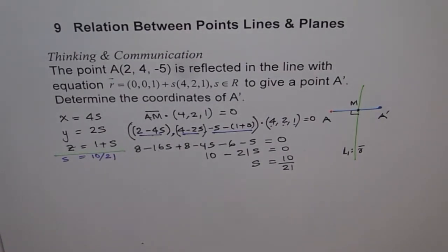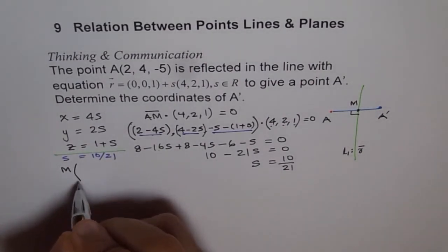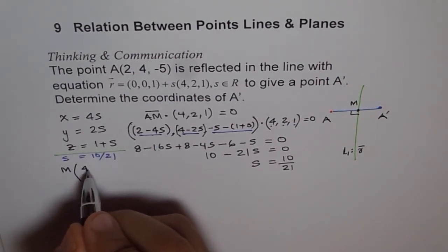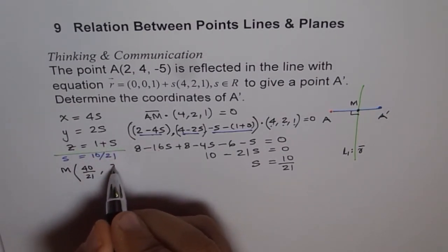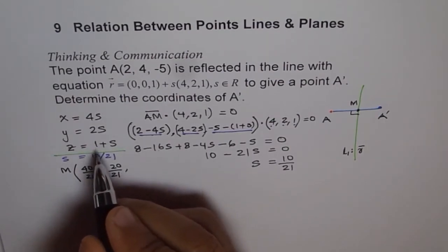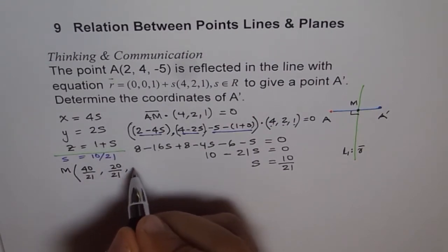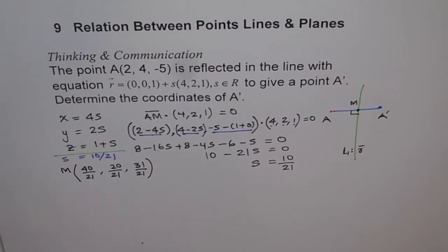That gives us the point. 10 divided by 21 is the value of S. So S equals 10/21. So we will use this and find our points. But this point, remember, these are our midpoints. So we say midpoint M will be 10/21 times 4, which is 40 over 21. And times 2, so 20 over 21. And plus 1, so plus 1 means 21 plus 10. So 21 plus 10 is 31. So that's our midpoint.